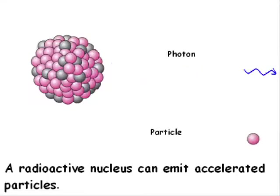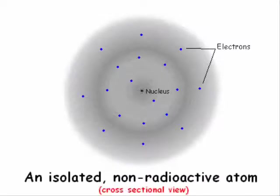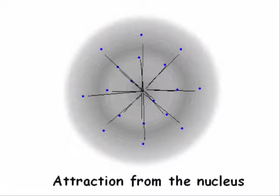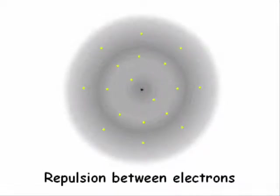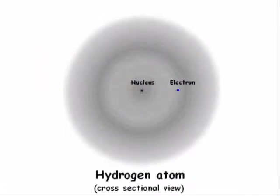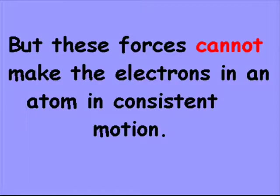A radioactive nucleus can emit accelerated particles, both charged and uncharged. But in an isolated non-radioactive atom, there are two types of forces acting on its electrons: attraction from the nucleus and repulsion between electrons. In a hydrogen atom, there is attraction from the nucleus only.